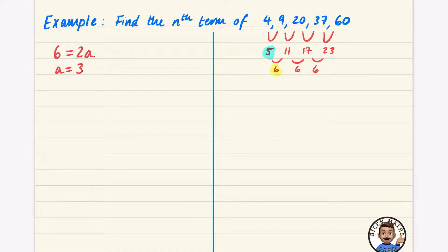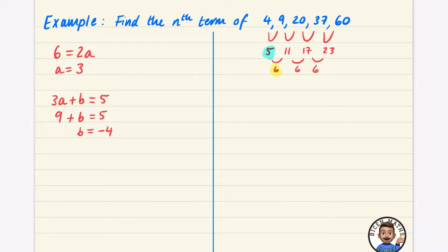For the next step, 3a plus b equals the first difference, which is 5. Since a is 3, we get 3 times 3 is 9, so 9 plus b equals 5, meaning b equals 5 minus 9, which is minus 4.